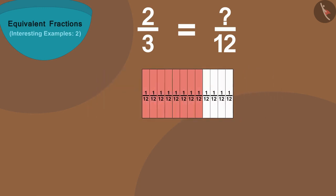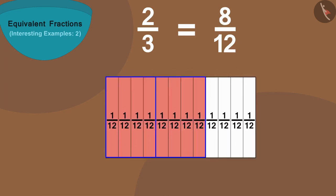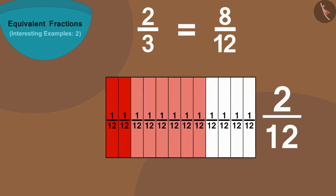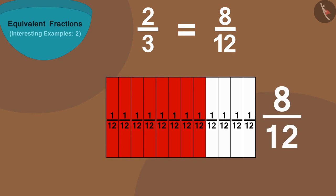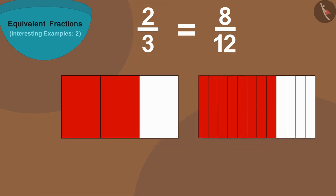We will find that 3 parts of the first strip are equal to 12 parts of the second strip. And if we look closely, 8 parts of the second strip is equal to 2 colored parts of the first strip. Thus, 2 by 3 is equal to 8 by 12.